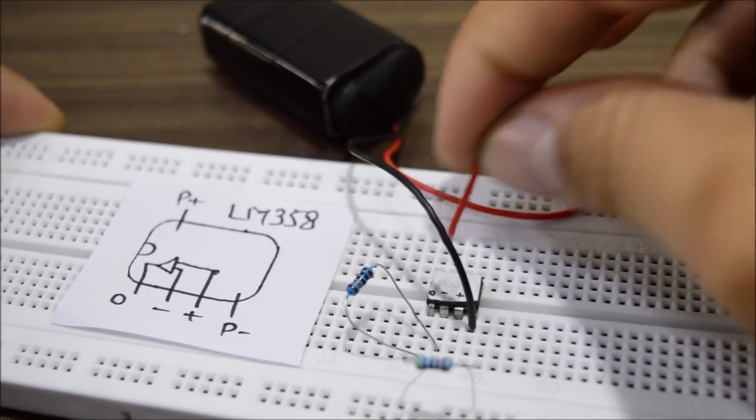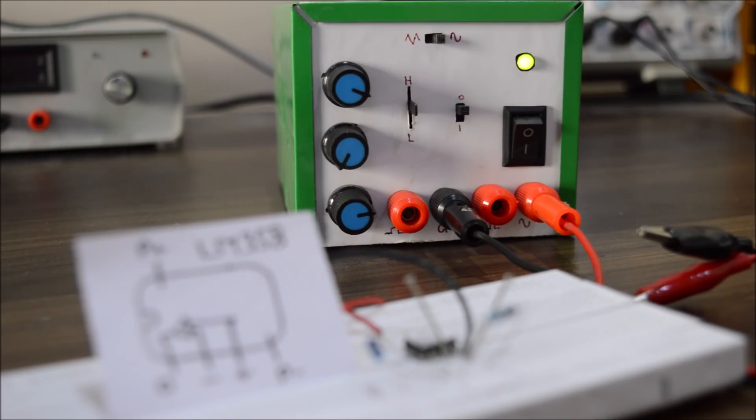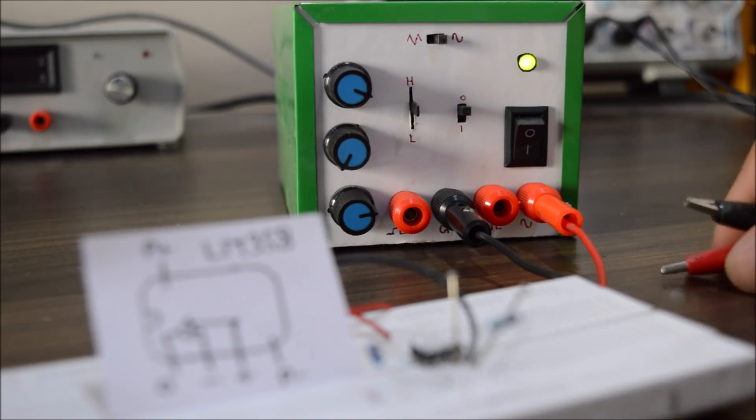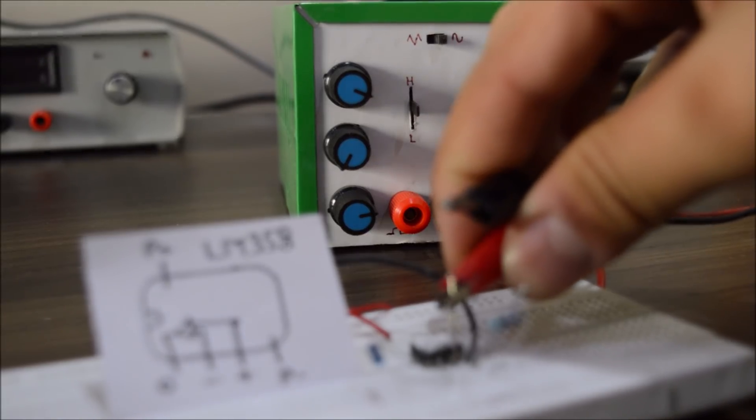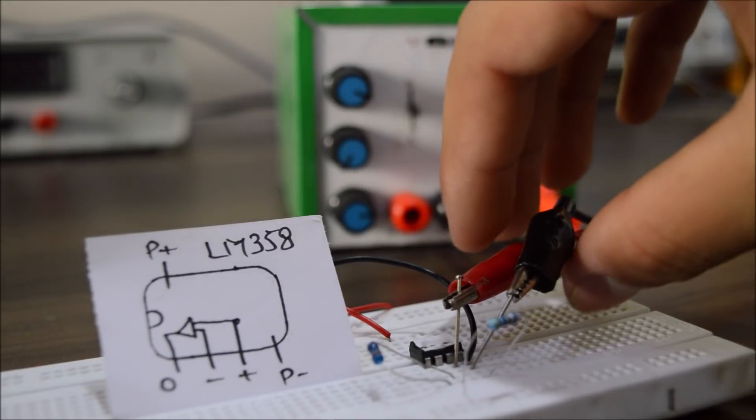This power is needed to amplify our input signal. Speaking of the input signal, I will use my DIY fancy function generator to generate a sinusoidal signal with a frequency of 1 kilohertz. This output will feed into the non-inverted input of the op-amp, since we are trying to make a non-inverted amplifier.